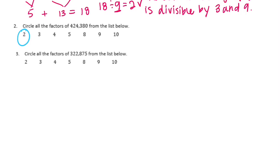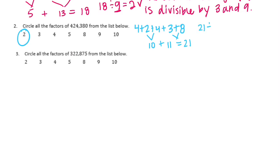Let's do 3, and while we're doing 3 we can also check for 9. The divisibility test is we add up all the digits: 4 plus 2 plus 4 plus 3 plus 8. We can add 0 but it's just 0. So 4 plus 2 is 6, plus 4 is 10, plus 3 plus 8 is 11, so we get 21. 21 divided by 3 is 7, so it is divisible by 3. 21 divided by 9 — 9 is not a factor of 21, so 9 doesn't work.